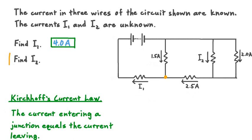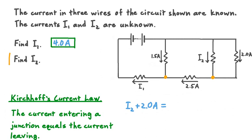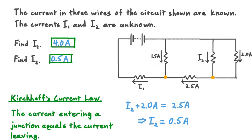Now let's use the same law to solve for current I2. We pick a different junction in our circuit. We can see that two currents enter this junction point — I2 and the current of 2.0 amps — and one current of 2.5 amperes leaves it. Applying Kirchhoff's current law, the sum of currents entering is I2 plus 2.0 amps, and that equals the total current leaving, 2.5 amps. Solving for I2, if we subtract 2.0 amps from both sides, we find that I2 is equal to 0.5 amps. So I1 is 4.0 amps and I2 is 0.5 amps.